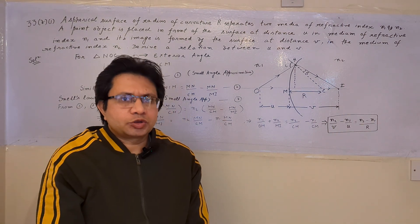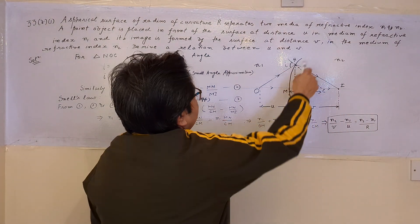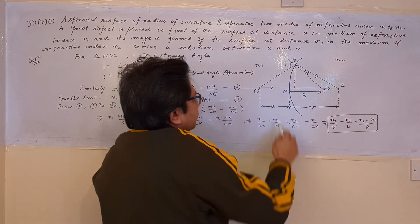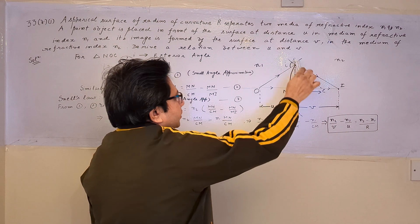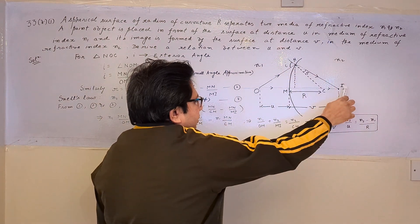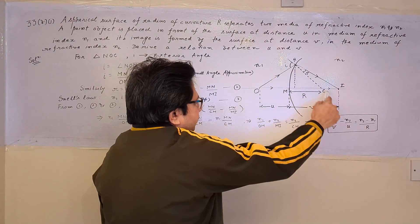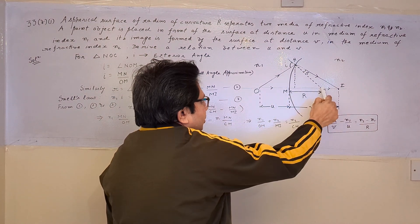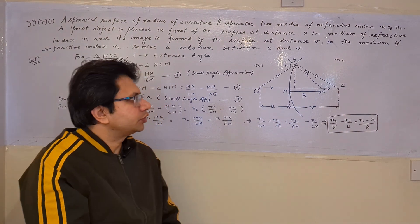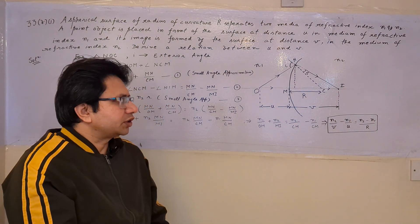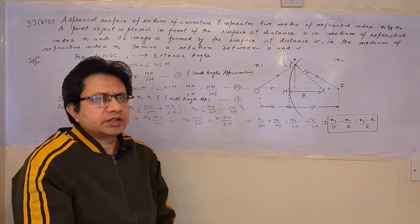The problem is based on the topic of ray optics. This diagram shows medium n1 and medium n2. A ray starts from the object, strikes the boundary surface, refracts, and forms an image I in the medium of refractive index n2. This is the normal to the surface, which goes to point C, the center of curvature. We have to derive the relationship between u and v.